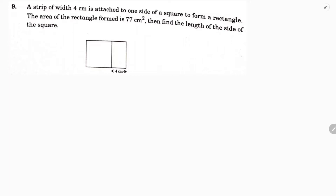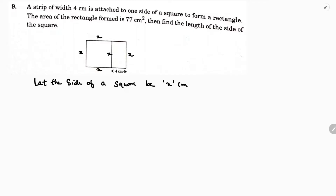Let the side of the square be x cm. So in the diagram, this side is x, and here also x, and this side is also x.